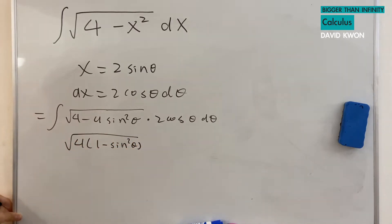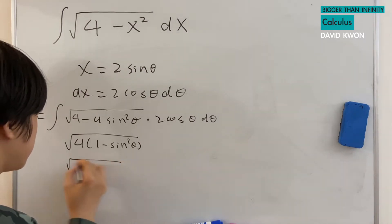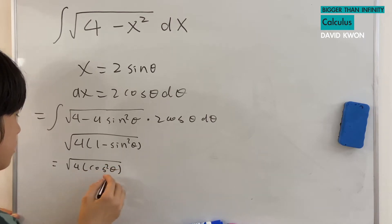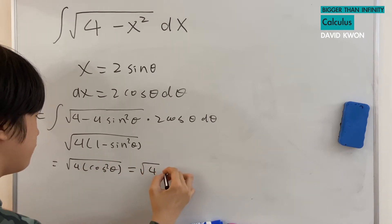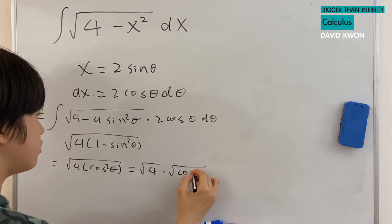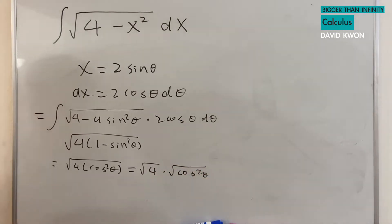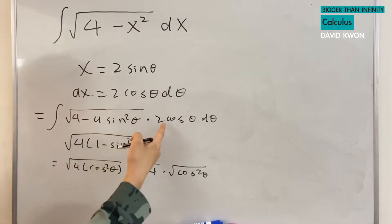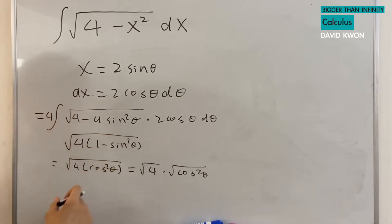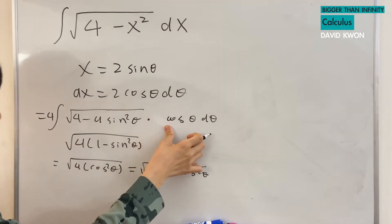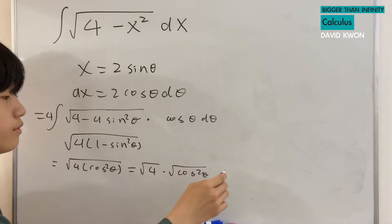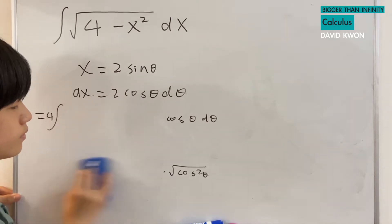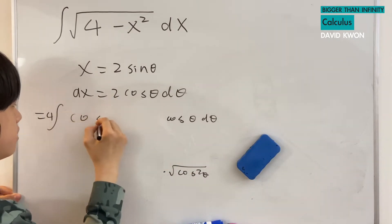And 1 minus sin squared theta is just cos squared theta. I can actually break them up like square root of 4 times square root of cos squared theta. The square root of 4 is actually the coefficient, so that can come up here and multiply by 2, but there's another coefficient, so that's times 4. And the square root of cos squared theta is just cos theta, so here we would have cos theta.